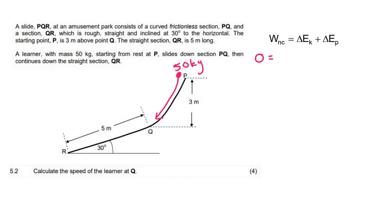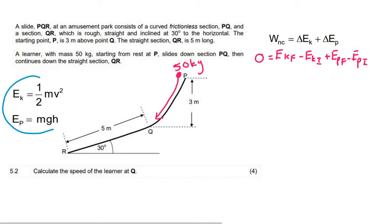And then for the delta EK, that's going to be EK final minus EK initial. And then for the delta EP, it will be EP final minus EP initial. Now, the formulas for EK and EP are given to you in the exams. There they are. And so what we can do now is we can just say that 0 is equal to a half M, which is 50. Now, the final velocity at point Q, we don't know. So we can just say V squared minus. Now, this person starts from rest. You see there? So the initial velocity would be 0. So I can say 50 times by 0, like that, plus.